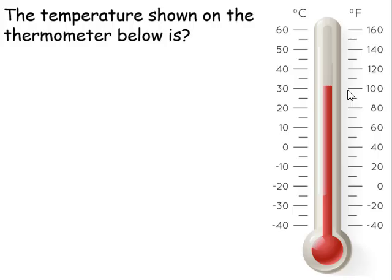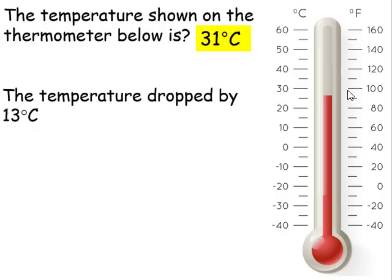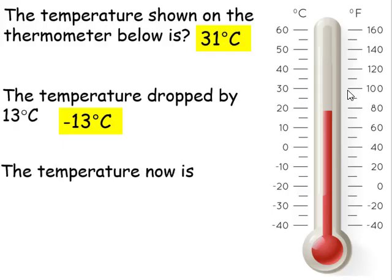The temperature shown in the thermometer below is 31 degrees. The temperature dropped by 13 degrees. To represent this drop of 13 degrees would be negative 13 degrees Celsius. The temperature now is 18 degrees.